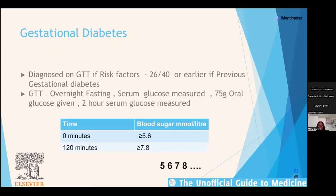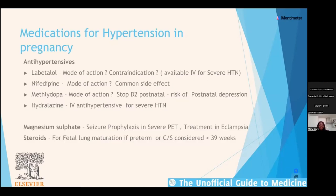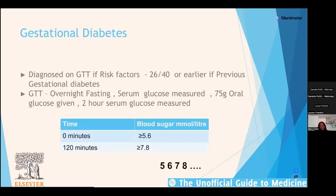Moving on to the second topic — gestational diabetes. It's a common and important condition, and one of the big complications is up to a 50% chance that a lady may develop type 2 diabetes later in life. We identify women with risk factors and perform glucose tolerance tests at around 26 weeks gestation. If a lady has had previous gestational diabetes, she gets a GTT as soon as she's booked and again at 26 weeks if the first was negative.